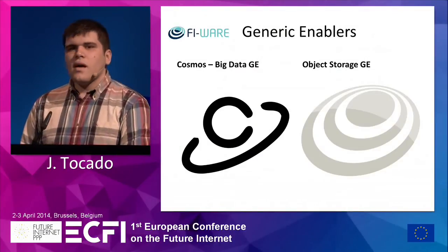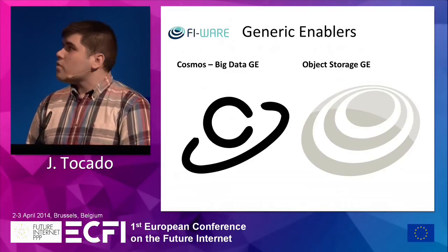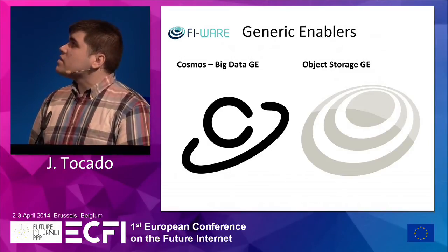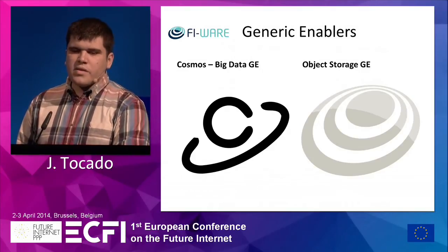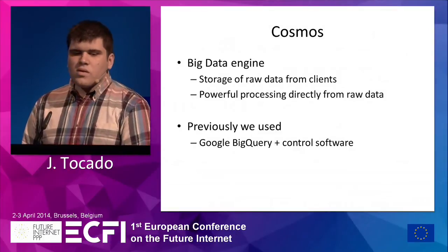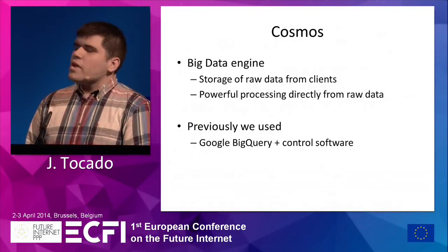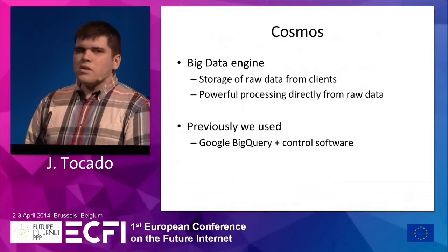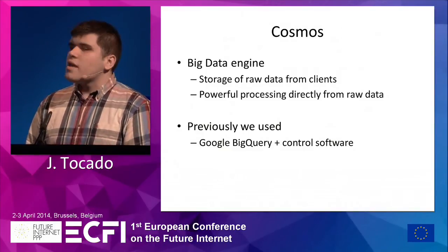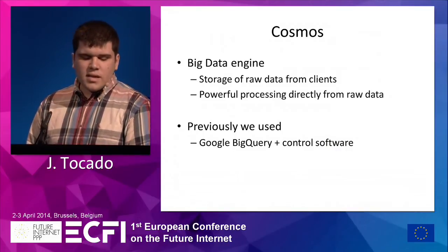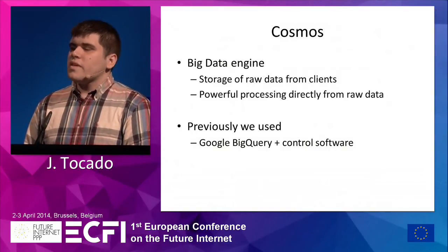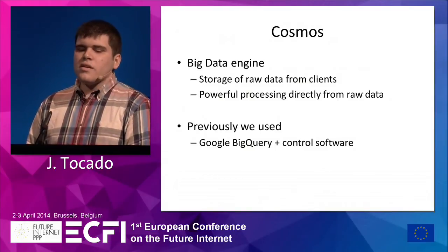Now I'm going to explain how we use Cosmos. As we are a big data platform, we need a good infrastructure to manage and process data. So we decided to use these two generic enablers. The first one is Cosmos. The structure of the raw data that we get from taxi drivers is very convenient for Cosmos because we only have to dump the data into the platform. Then we use Hive for SQL queries and get the data processed. Cosmos distributes the charge of the analysis across all the clouds. It's very fast.